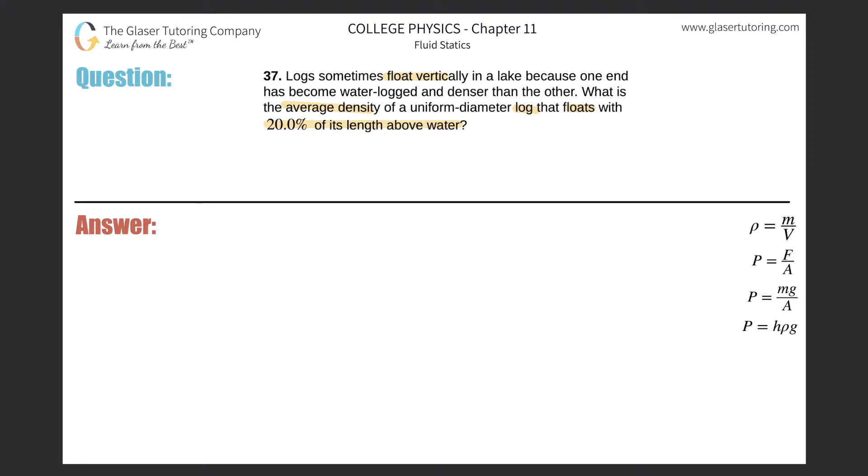So the outcome of the prior problem was realizing the fraction submerged is equal to the ratio of the density of the object to the density of the liquid that the object is floating in. This was the outcome of the prior problem.